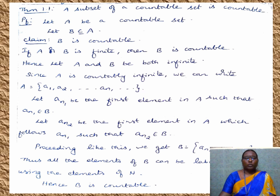Theorem 1.1: A subset of a countable set is countable. We have to take a countable set, form a subset, and prove that the subset is countable. If the given set A itself is finite, then automatically the subset is also finite and hence countable. If the given set is infinite and the subset is finite, then automatically the subset is countable. So we only need to consider the case where both the given set and the subset are infinite. Let us see the proof.